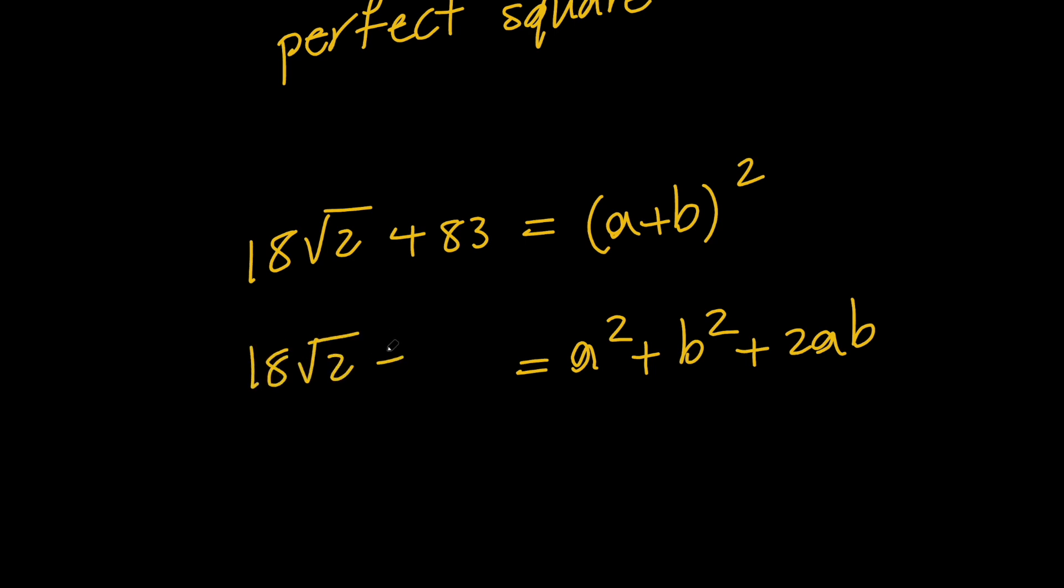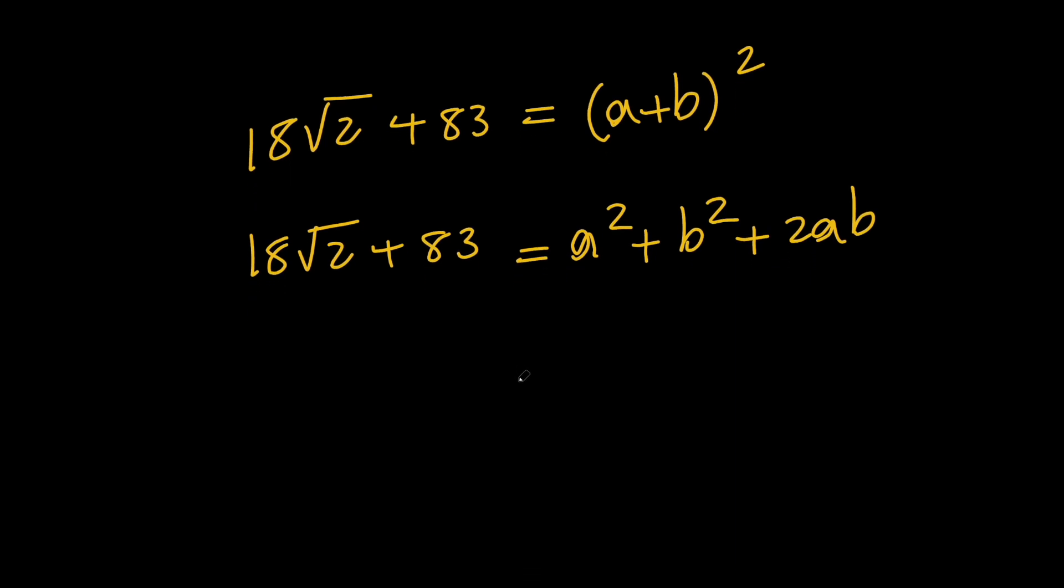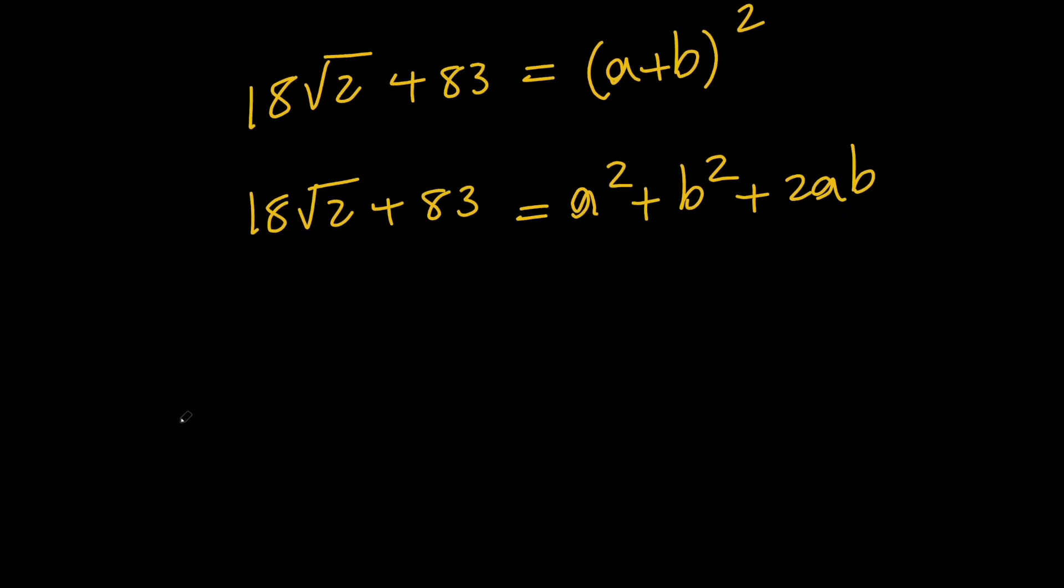So we want to solve for a and b and to do that we need to turn the left hand side in the form of the right hand side and then compare both sides to solve for a and b. But notice that on the right hand side we have three terms while on the left hand side we have two terms. So we need to break one of these two terms on the left hand side and I break 83 because we can write 83 as 81 plus 2 and we do that because 81 is a perfect square.